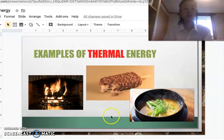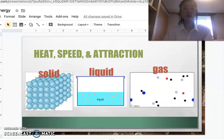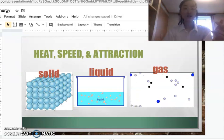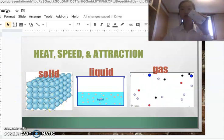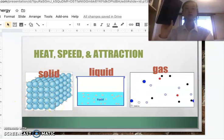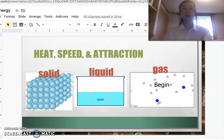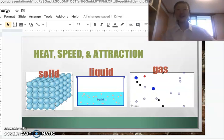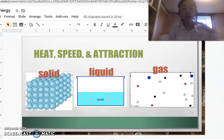So the main thing we should go over is heat, speed and attraction. So here we have a solid. So that could be something like a cell phone or a journal, right? And then we have liquid, which could be like water and gas, like air.